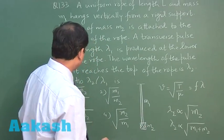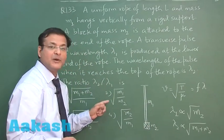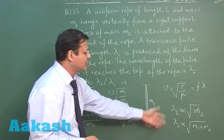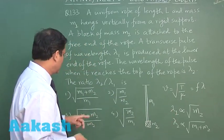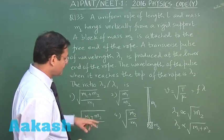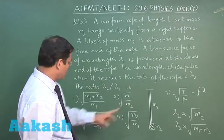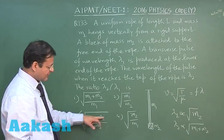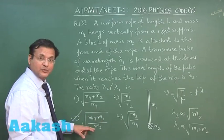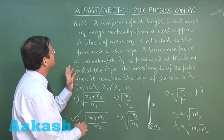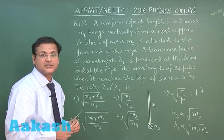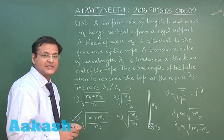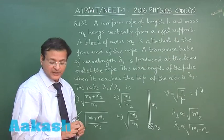They are asking for λ2/λ1. This ratio comes out to be √((m1 + m2)/m2), which is the correct option for question 133.